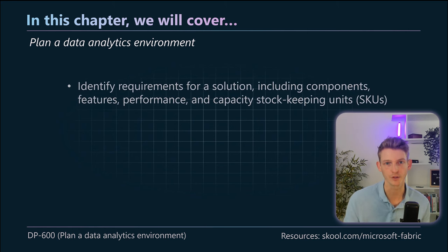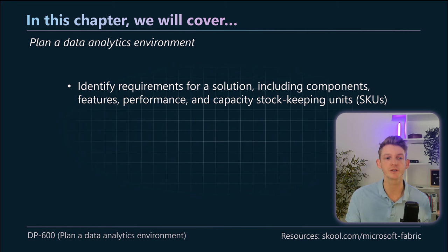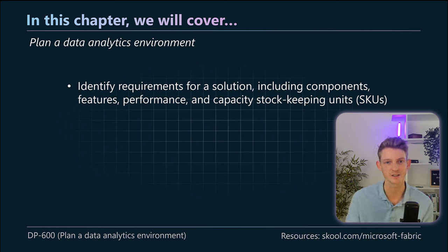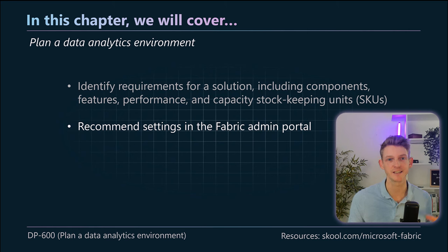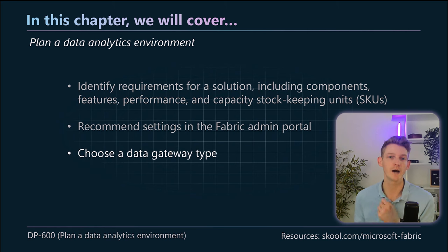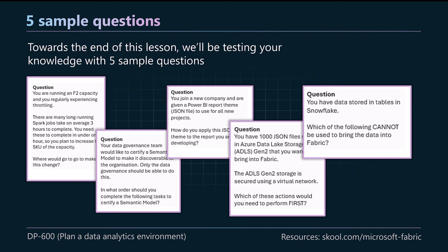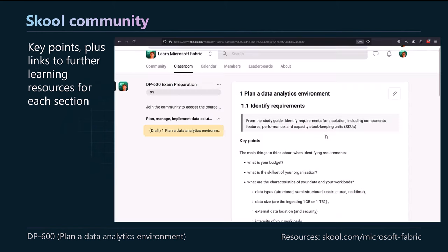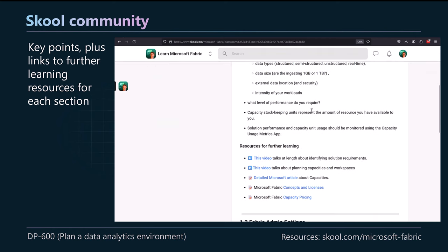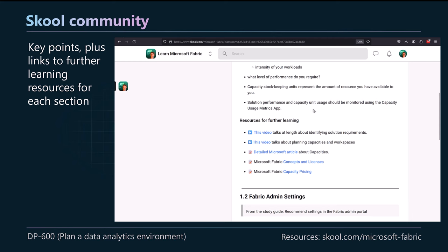These are the elements we're going to be covering: how do we identify requirements for a solution — the various components, features, performance, capacity, SKUs. How do we make decisions about that? We're also going to be looking at how to recommend settings in the Fabric admin portal, how to choose data gateway types, and creating custom Power BI report themes. Towards the end of the lesson, we'll be testing your knowledge with five sample questions. All lesson notes, key points, and links to further learning resources will be published on the school community, so I'll leave a link in the description.